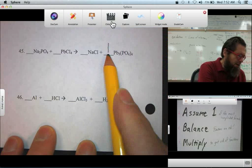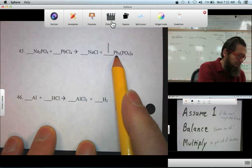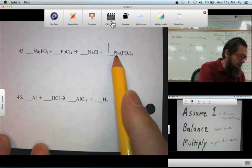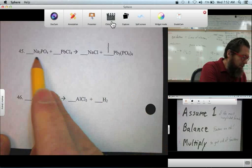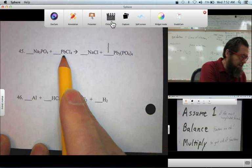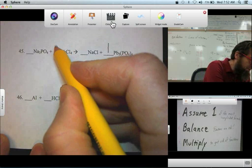Now, that means there are three Pb's, three lead atoms. So, find leads in the reactants. Yes, here. And there's only one lead here. So, that means this must be a three.